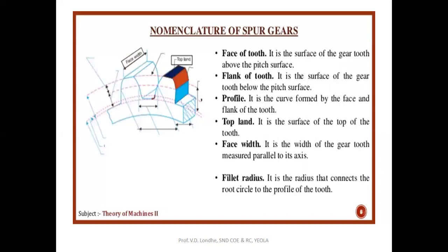The face of the tooth is the surface of the teeth above the pitch circle. The flank of the tooth is the portion below the pitch circle. The top side of the teeth is called the top land and the bottom part is the bottom land. Face width is measured parallel to the axis of the shaft. The fillet radius is the small curved zone that connects the root circle — the dedendum circle — to the profile of the teeth.